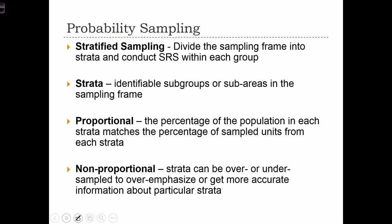When we do it proportionally, we ensure that the percentage of the population in each strata matches the percentage of sampled units from each strata. In other words, suppose we have a strata that contains 20% of the population—we then ensure that 20% of our sample comes from that strata. In non-proportional stratified sampling, strata can be over- or under-sampled to emphasize or get more accurate information about particular strata that we are more interested in, based on our research questions.